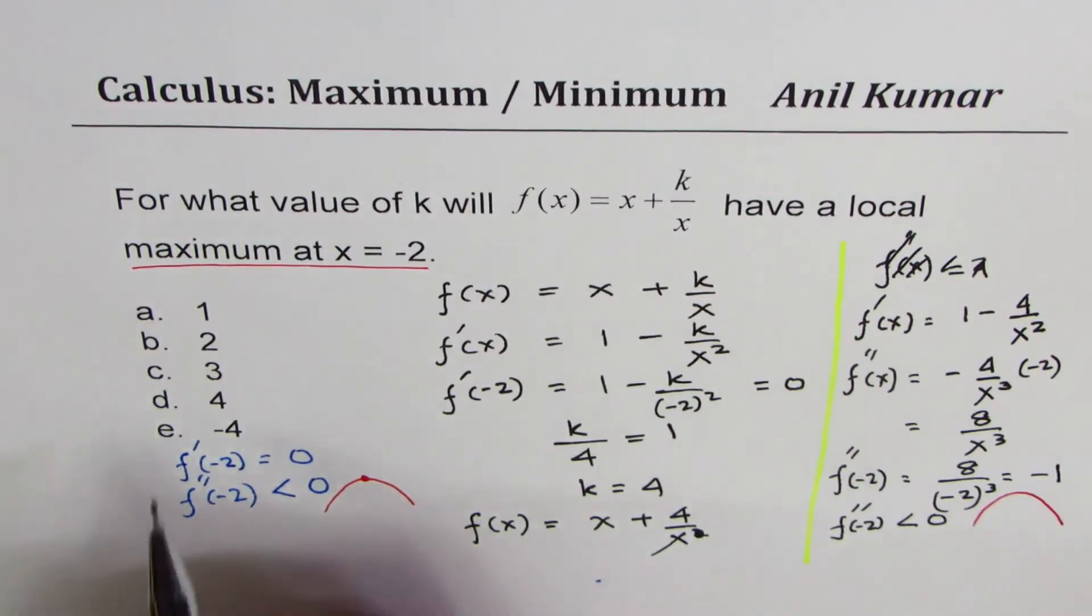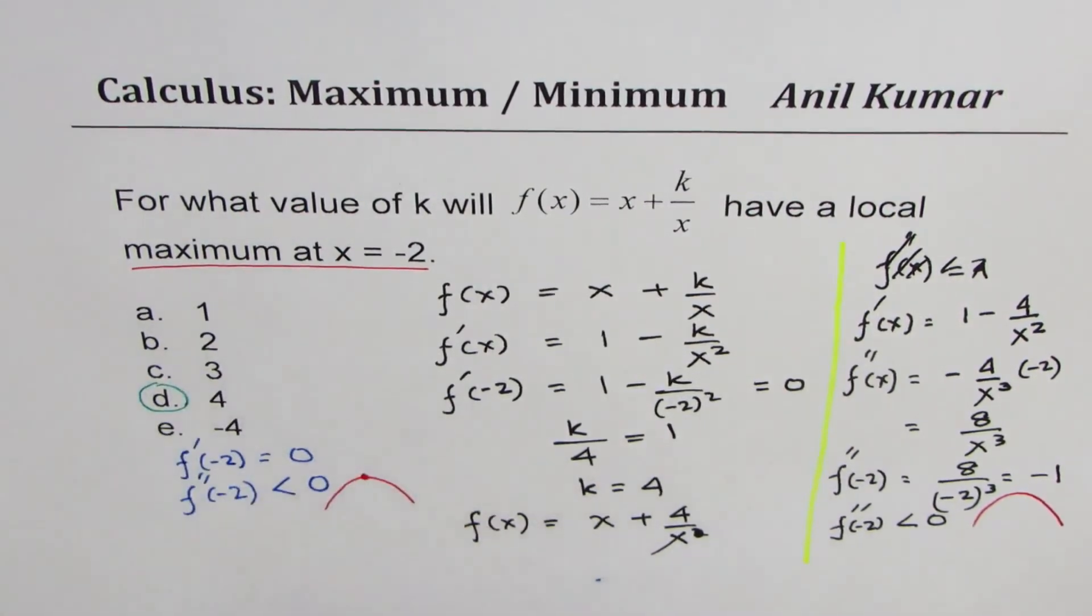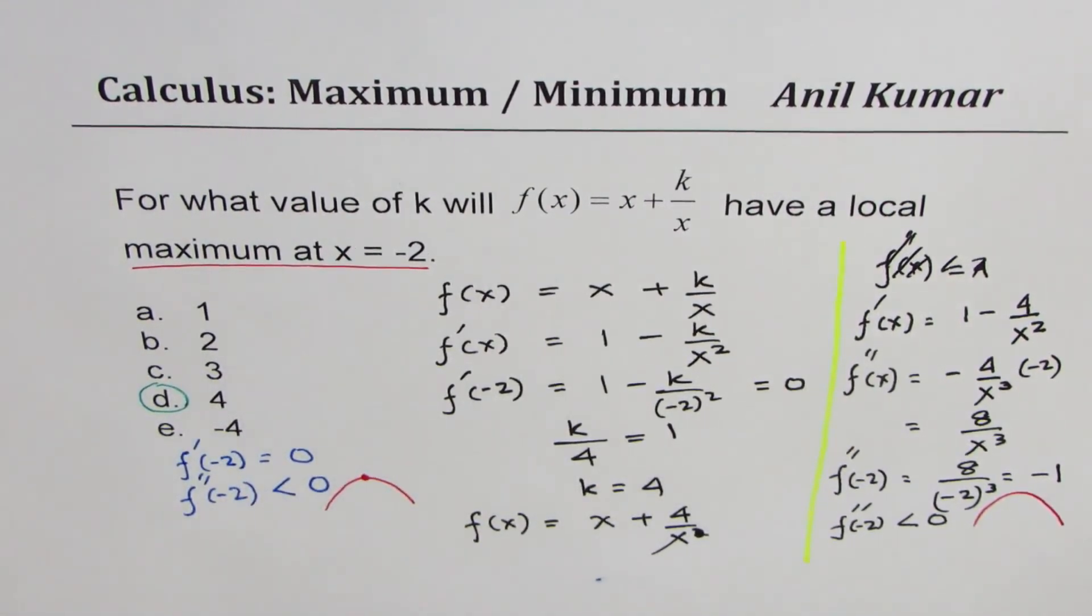So the correct choice here is d, k = 4. So that is how you should be doing it.